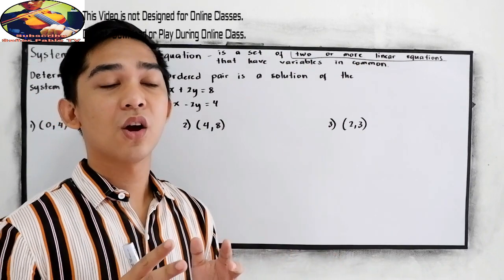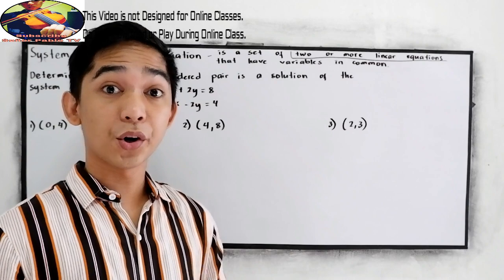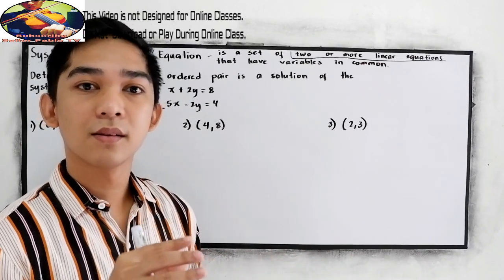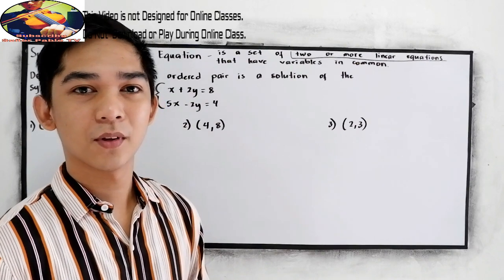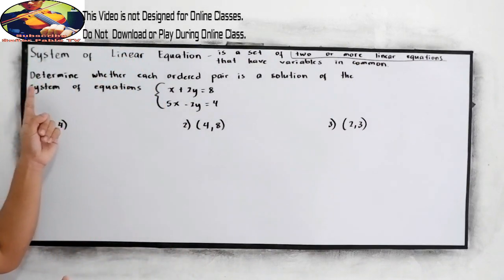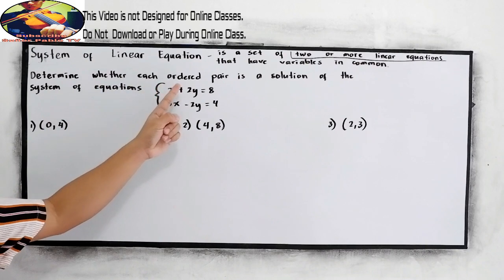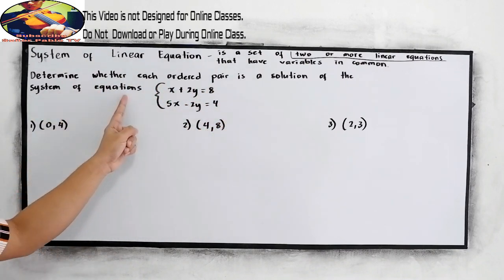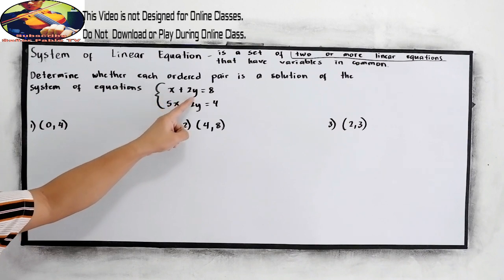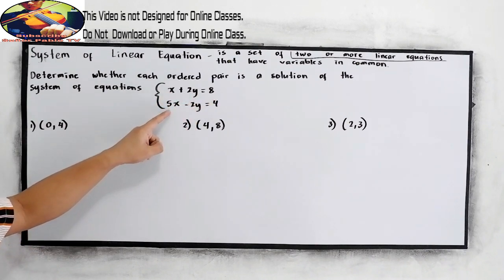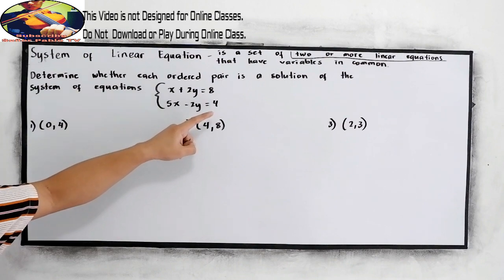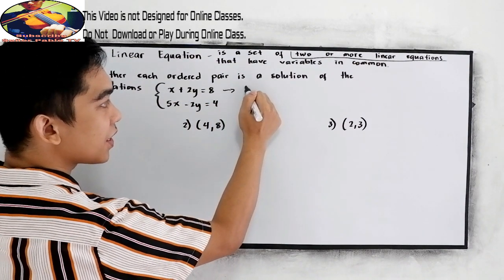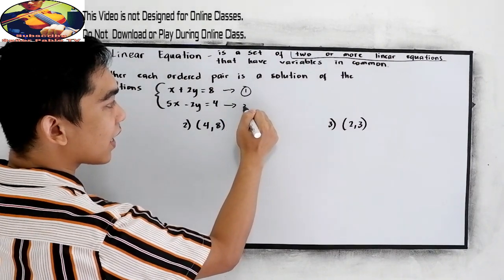We're going to test whether the given points are a solution of our system of linear equations. We need to determine whether each ordered pair is a solution of the system. Our first equation is x plus 2y equals 8, and our second equation is 5x minus 2y equals 4.